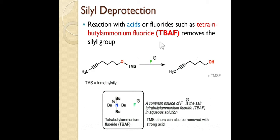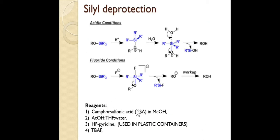The most commonly used fluoride source is tetrabutylammonium fluoride (TBAF). This is the structure of TBAF — a source of fluoride used for the deprotection of TMS and other silyl ethers. Let's now look at the mechanism of both acid and fluoride deprotection.